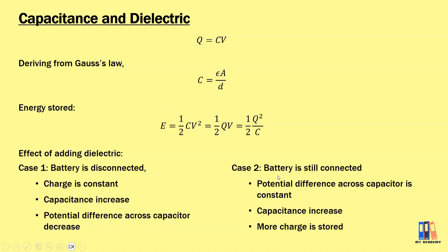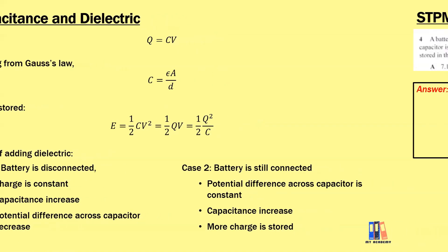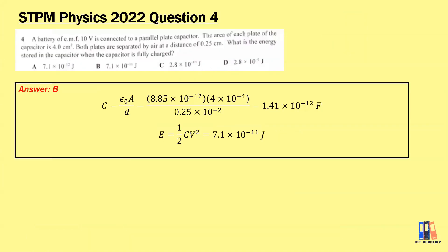For the case where the battery is still connected, adding the dielectric will increase the capacitance, meaning more charge is stored. What is constant here is the potential difference across the capacitor.